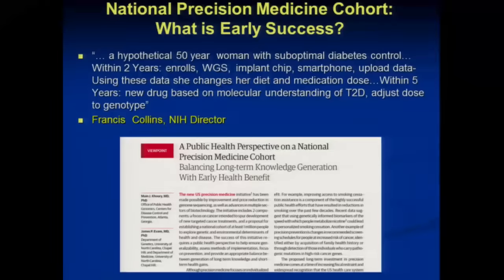What prompted me to write this piece, published in JAMA earlier this year, is when Francis Collins, at one of the many workshops NIH sponsored, talked about what early success would look like, because we're spending millions of dollars to follow a million-plus people. It doesn't look like there is an end in sight — no hypothesis-driven enterprise, just collecting data on large numbers of people. He used a hypothetical 50-year-old woman with suboptimal diabetes control, and suggested that based on her sequence, implanted chip, smartphone, and technology, within five years there would be a new drug that, based on enhanced molecular understanding of diabetes, would adjust the dose to the genotype.